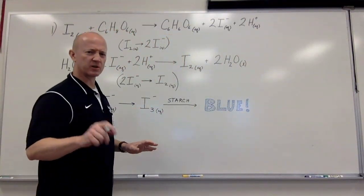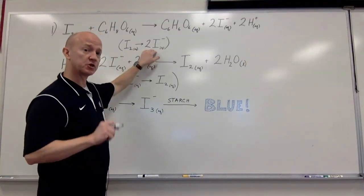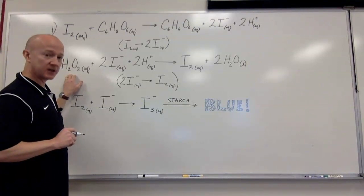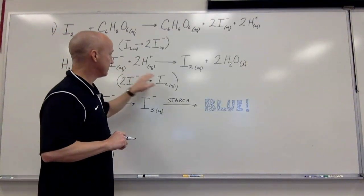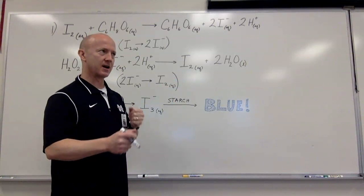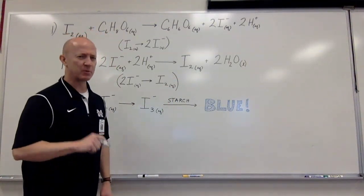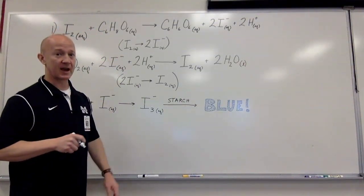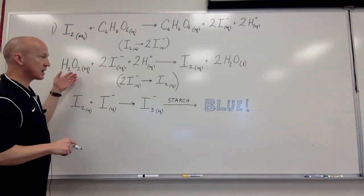The SparkNotes version: iodine is converted to iodide in the first reaction. In the second reaction, you have hydrogen peroxide converting the iodide ions into iodine. It's a back and forth — a clash of the titans. Who wins? Well, in this case, we put a whole lot more hydrogen peroxide in there than ascorbic acid, vitamin C. So because of that, the second one wins out.